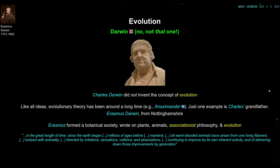Here is a quote from Erasmus Darwin: 'In the great length of time since the earth began, millions of ages before mankind, all warm-blooded animals have arisen from one living filament, endued with animality, directed by irritations, sensations, volitions and associations, continuing to improve by its own inherent activity, and of delivering down those improvements by generation.'